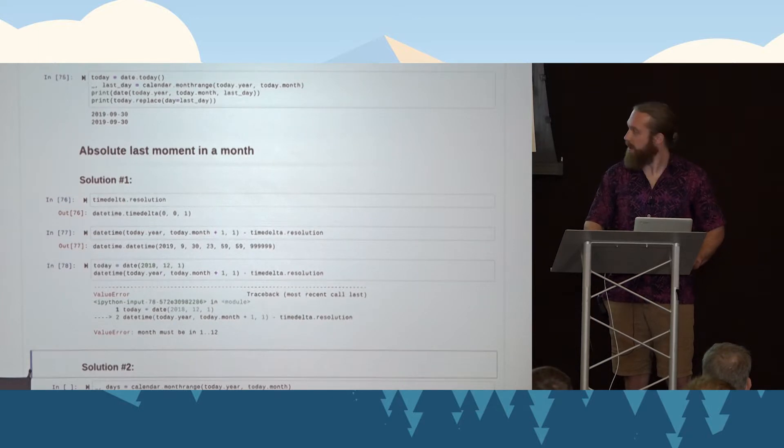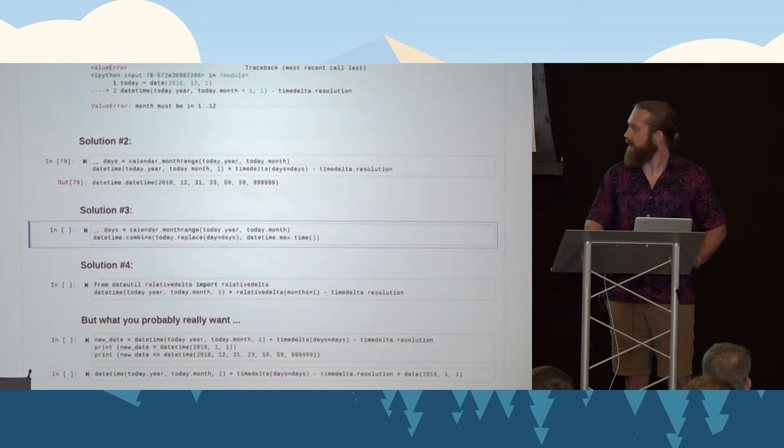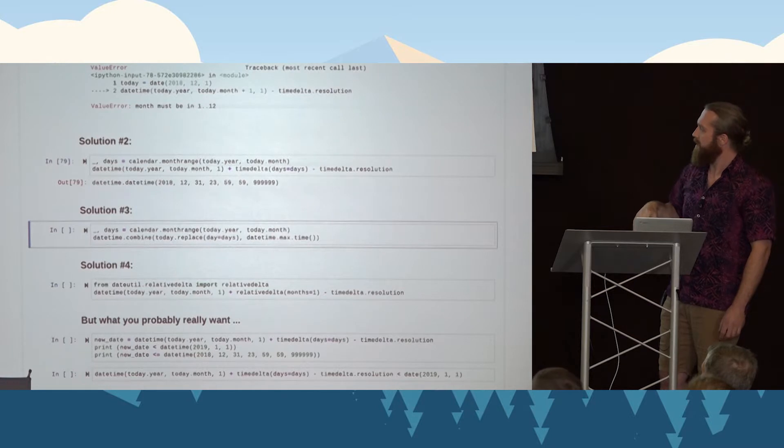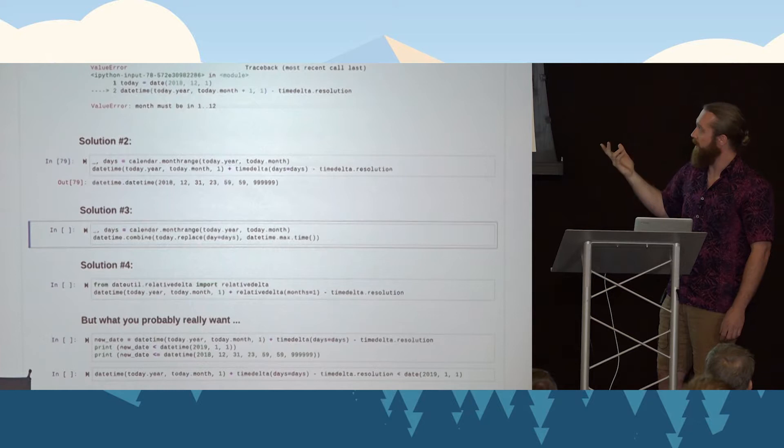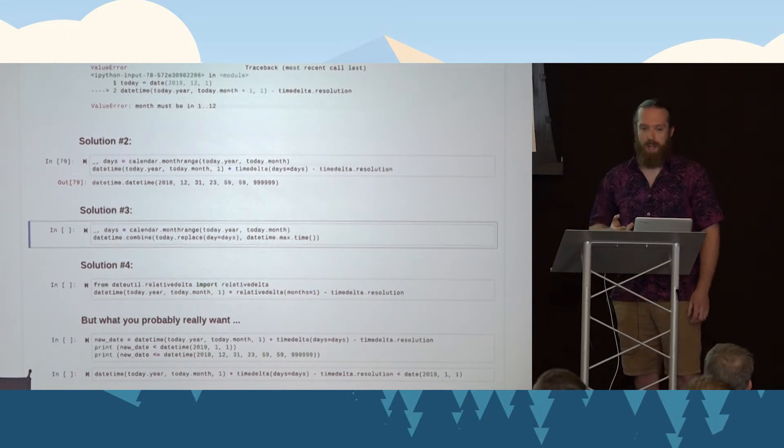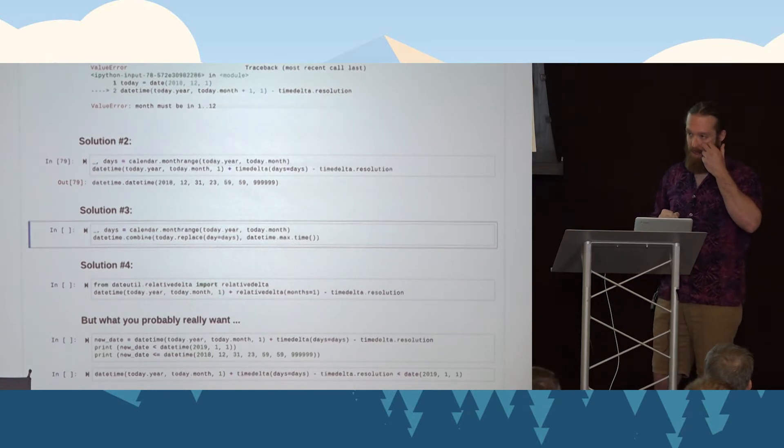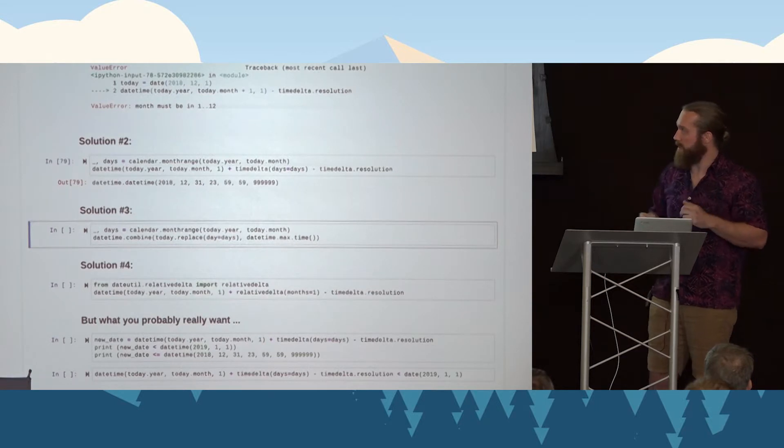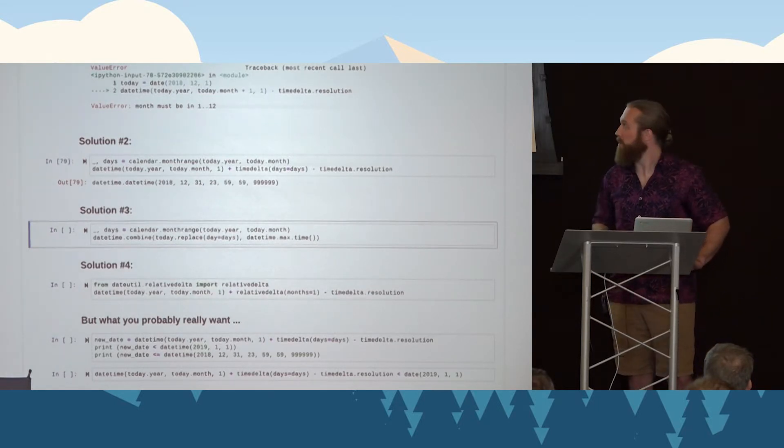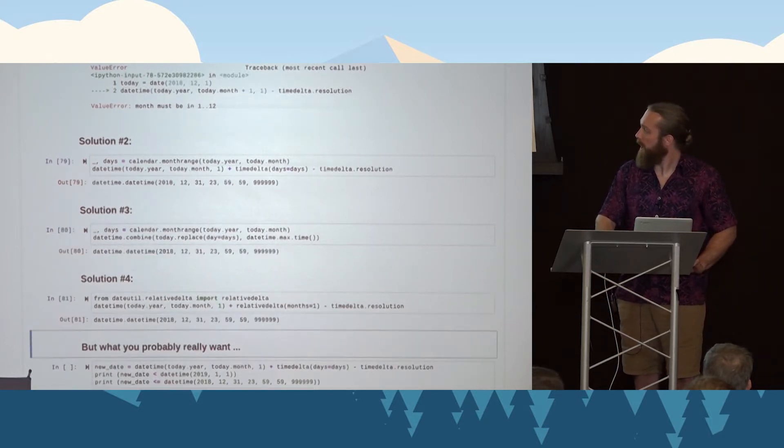So, really, the best solution to something like this is to, once again, use month range to get that value and subtract it out. Interestingly, you can also use max. So, date times have a max and min value associated with them. Where datetime.min is, I believe, epoch time, and datetime.max is some ridiculously large year that we're probably never going to hit.